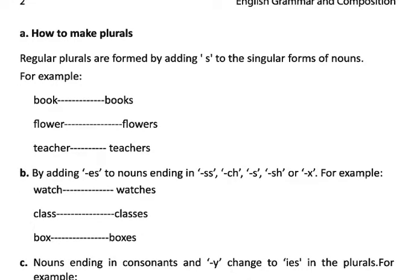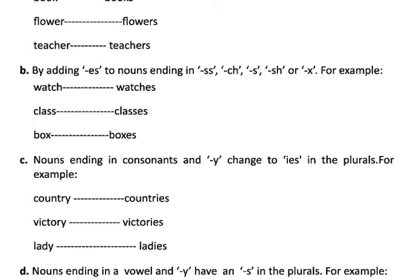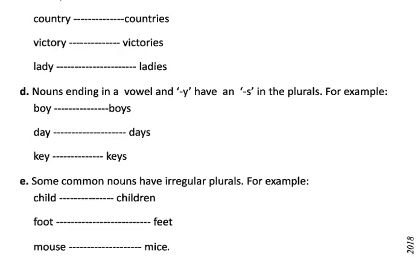For example: 'box' becomes 'boxes.' When a noun ends in a consonant plus 'y,' the 'y' changes to 'i' and we add 'es' — for example, 'country' becomes 'countries,' 'victory' becomes 'victories,' 'lady' becomes 'ladies.' When a noun ends in a vowel plus 'y,' just add 's' — for example, 'boy' becomes 'boys.' Some nouns have irregular plurals — for example, 'foot' becomes 'feet,' 'mouse' becomes 'mice.'